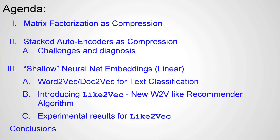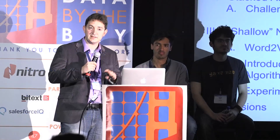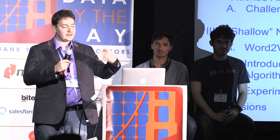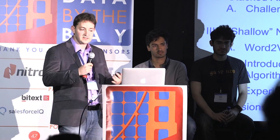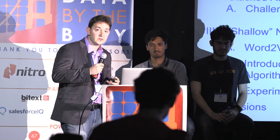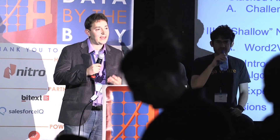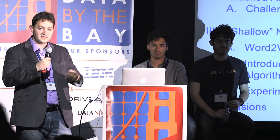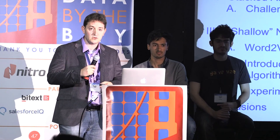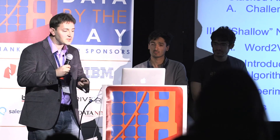Quick run through the agenda. We're going to do a little bit of recap in the first two acts: matrix factorization as compression, and talking about stacked autoencoders in order to motivate what led us to this idea for LikeToVec. Then we'll go into shallow neural word embeddings, talk about Word2Vec for those not familiar. And then move on to the main results — LikeToVec, an application of Word2Vec-type strategies for recommender engines — and go over some results.